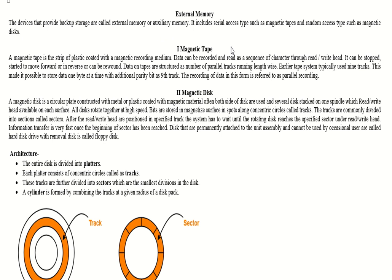Serial access means one after another, like a magnetic tape. Random access is random — if you have stored data, you can read any data from any track or any place directly. This is the example of magnetic disk.